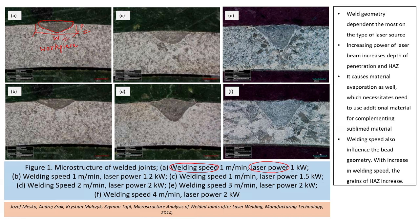Similar laser beads can be observed in pictures B, C, D, E, and F. For case A, the weld speed is 1 meter per minute and laser power is 1 kilowatt. For case B, speed is the same at 1 meter per minute but power is increased by 200 watts to 1.2 kilowatt. In case C, speed remains constant but power is further increased to 1.5 kilowatt.